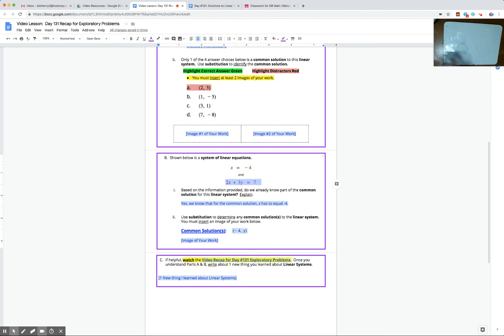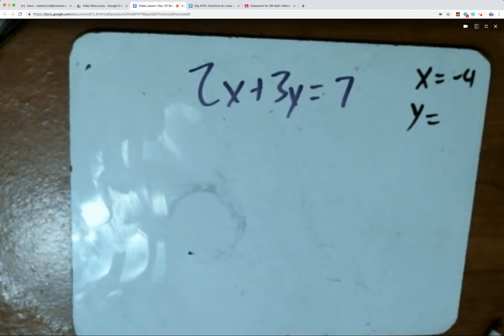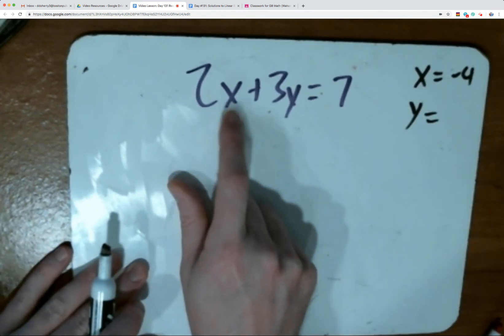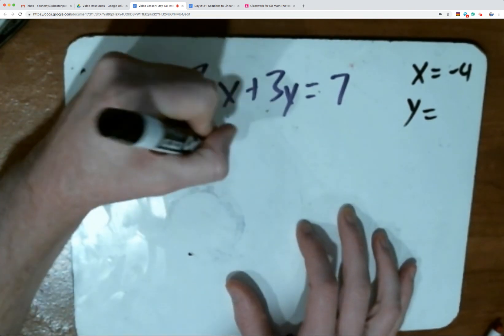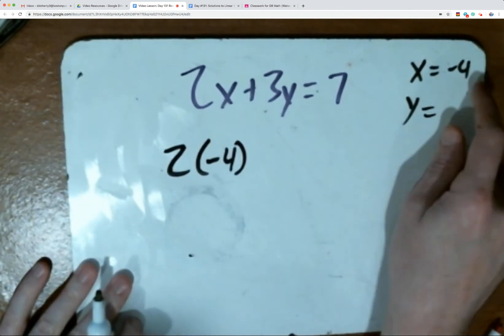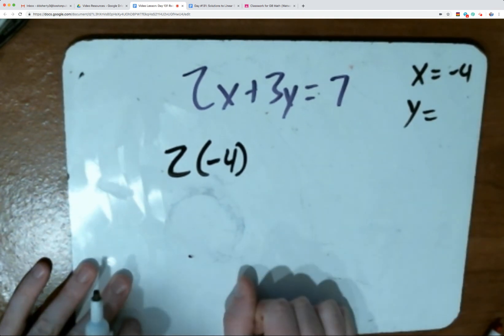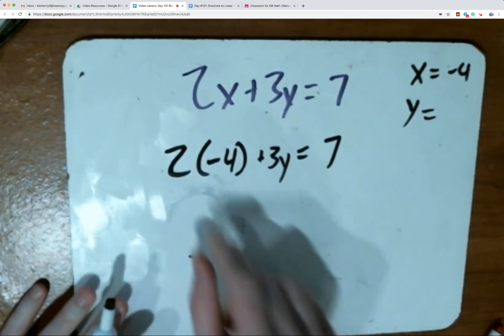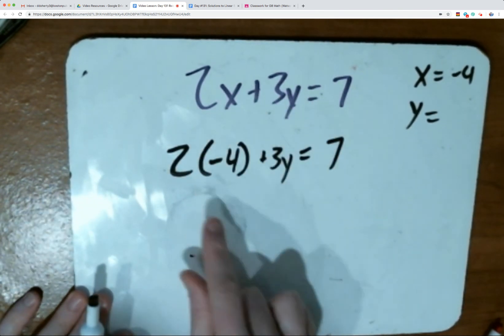So I'm going to write that equation down. 2x plus 3y equals 7. And over here, I'm going to note, of course, that x has to be equal to negative 4. We don't know what y is yet, the other half of our common solution. But hopefully some of you are thinking substitution, or as Mr. Neville would say, plug and chug. I'm going to plug the negative 4 in for x. It's going to become 2 times negative 4, because I know x has to be equal to negative 4, based on the other equation. The rest of the equation remains the same, but now we've transformed it from an x and y, a two-variable equation to only y.